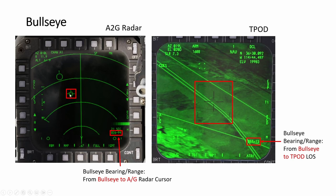The TDC cursor on the ground radar also uses bullseye — bullseye to the cursor. On TPOD it's called L or S — line of sight — bullseye to the cursor.